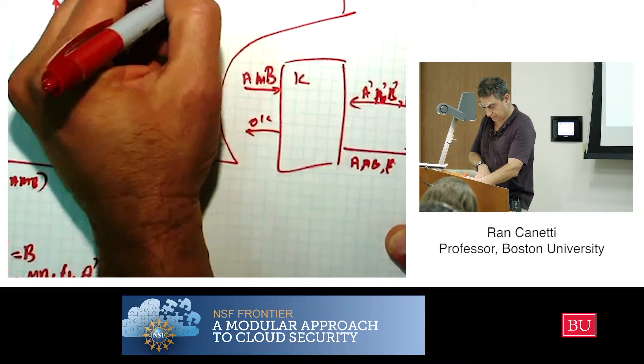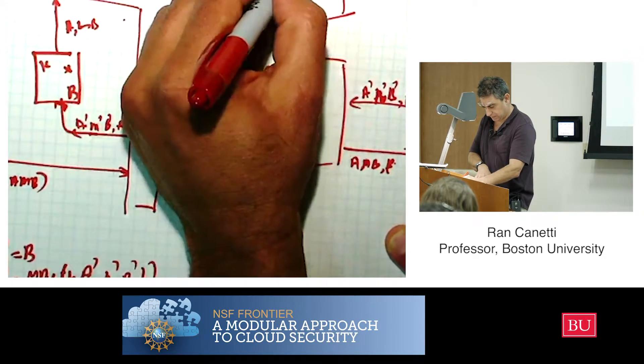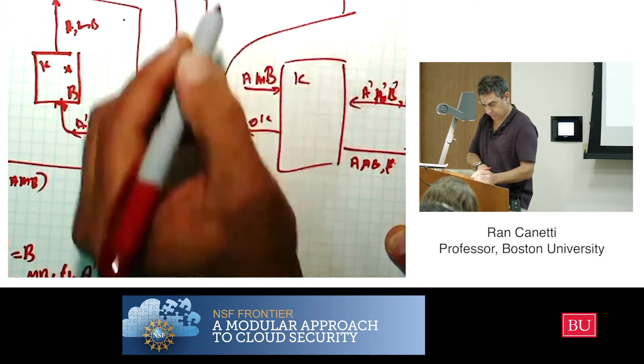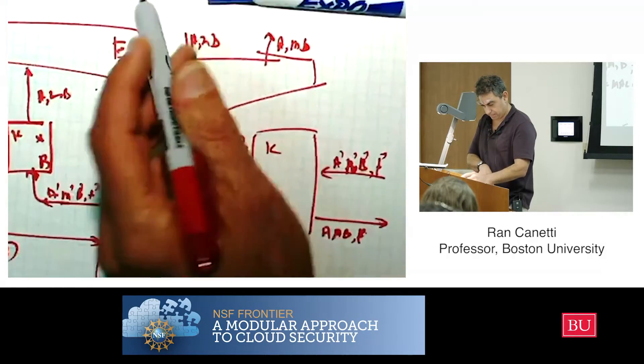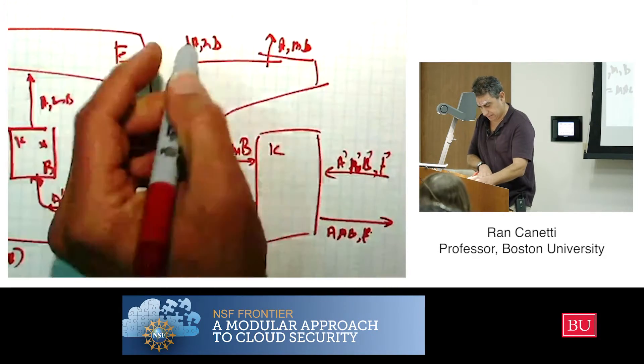In which case the trusted service is going to output to the environment the message. So you got here A, M, B, and in which case it's going to send A, M, B outputs from the B side. So that's the simulation.